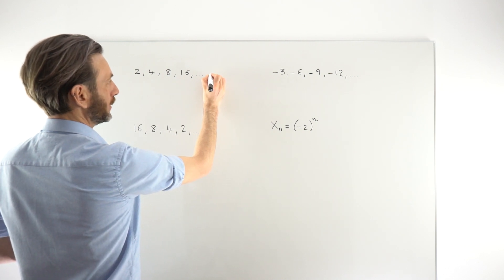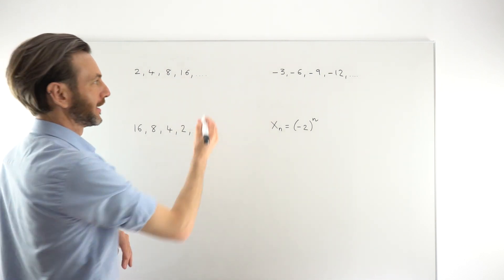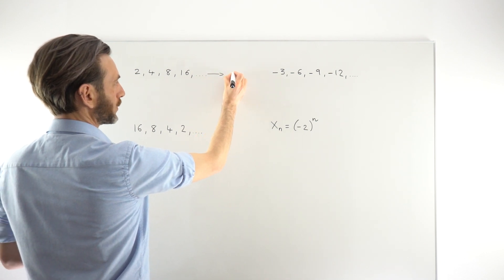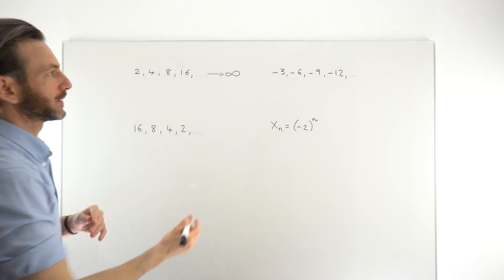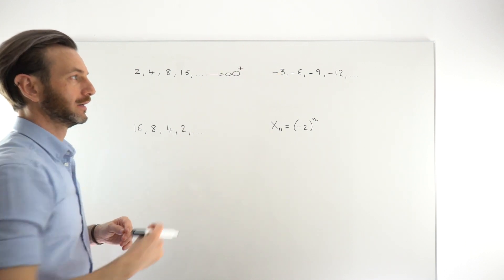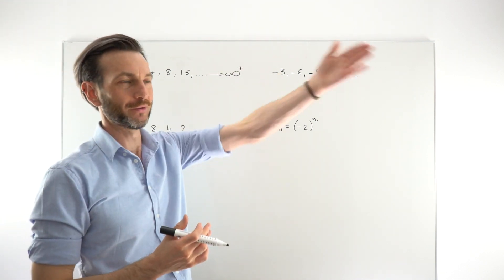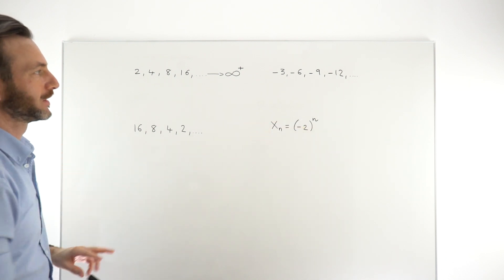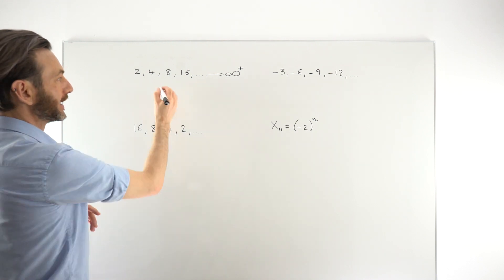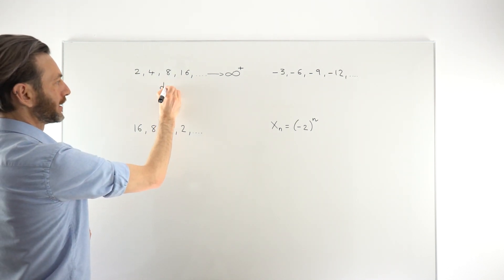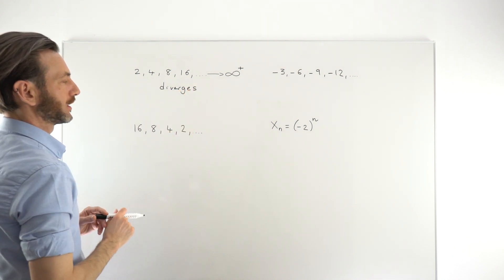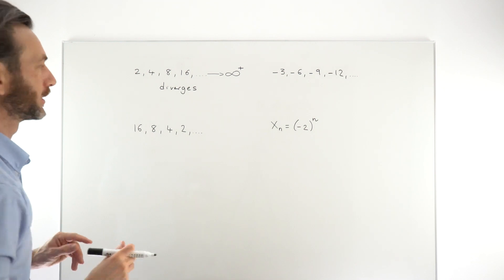So the behavior of that sequence is that it's tending towards infinity — positive infinity, because the numbers are getting bigger on the positive side of the number line. That sequence has not gone to a limit; it's gone instead to infinity. So we say that sequence diverges, is divergent, or has diverged. That's a divergent sequence.